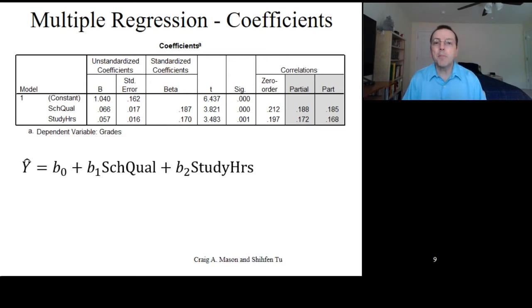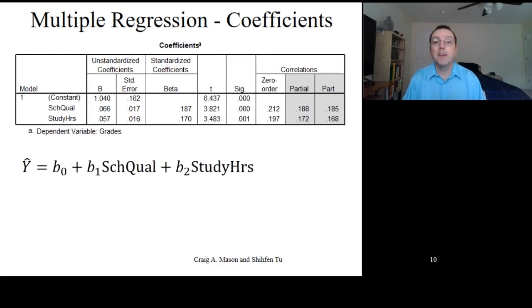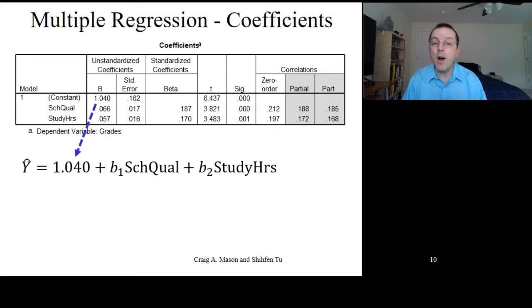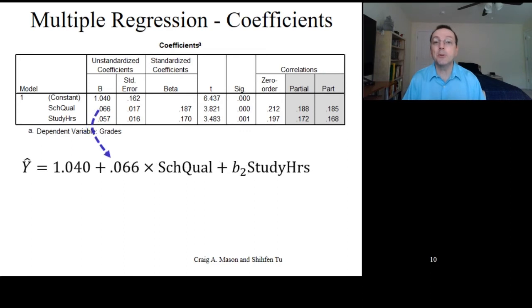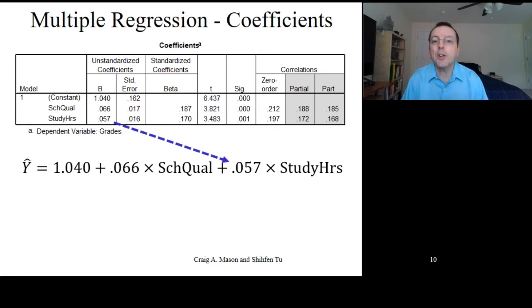We then plug in values for b0, b1, and b2 based on the results in the coefficient table. b0 is equal to 1.04, so we enter that. b1, the effect of school quality, is equal to 0.066, so we'll enter that. b2, the effect for study hours, is equal to 0.057. Now, this is our regression equation.